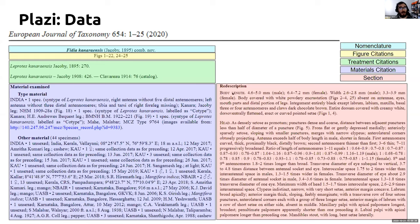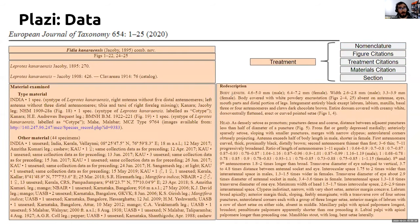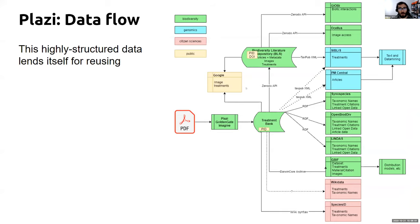The treatment as a whole — including the description, nomenclature, treatment citations, and material citations — is the author's interpretation of a taxon concept with all information included in a particular paper. Plazi believes this is the unit of taxonomic work, and enabling treatments to be FAIR and citable is one step toward data liberation for taxonomy.